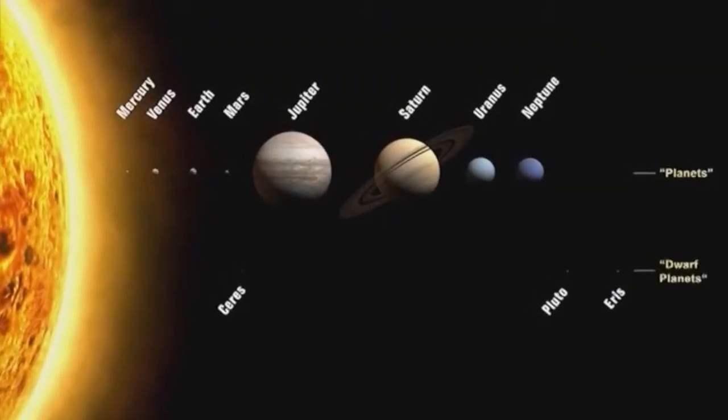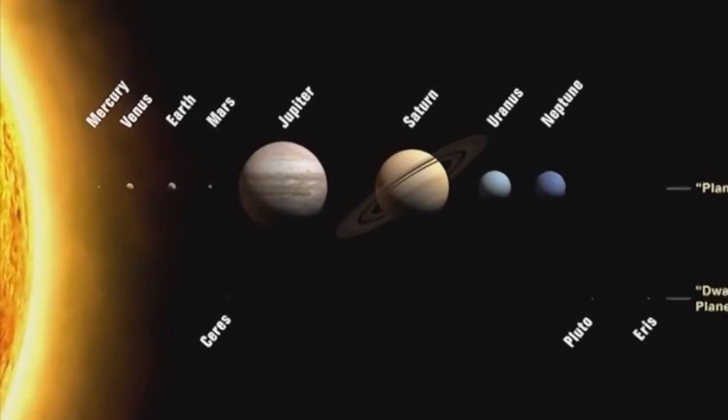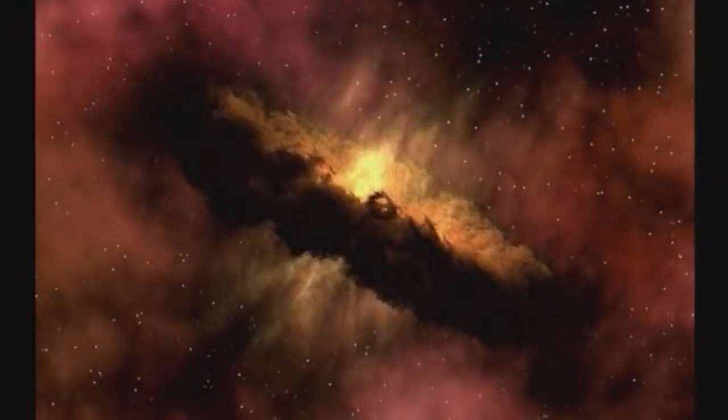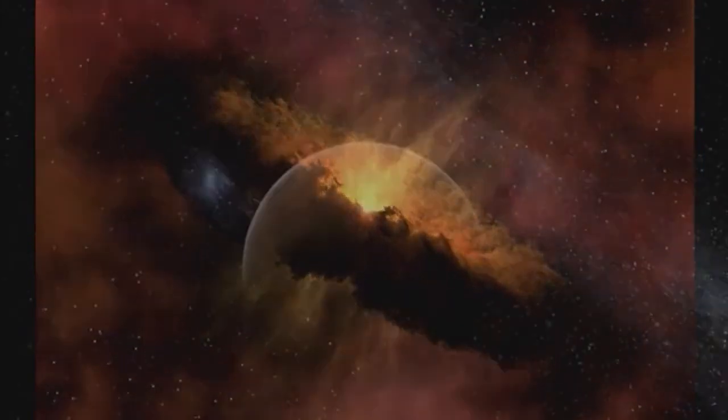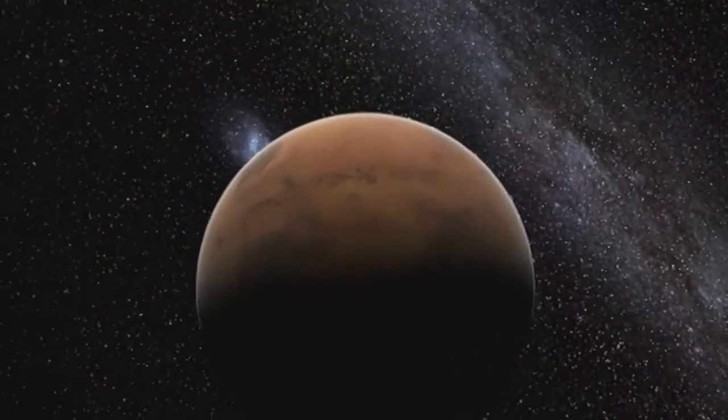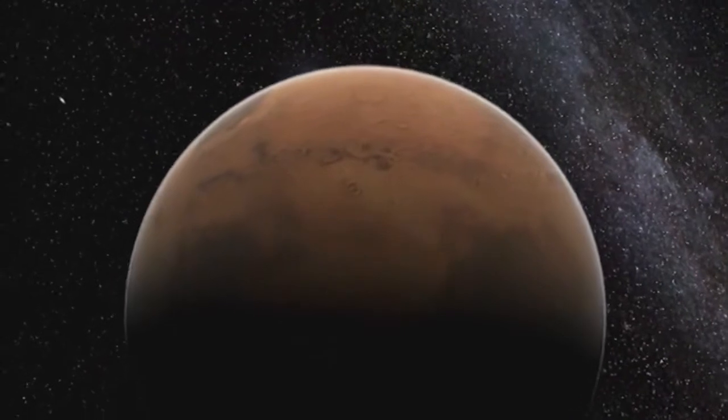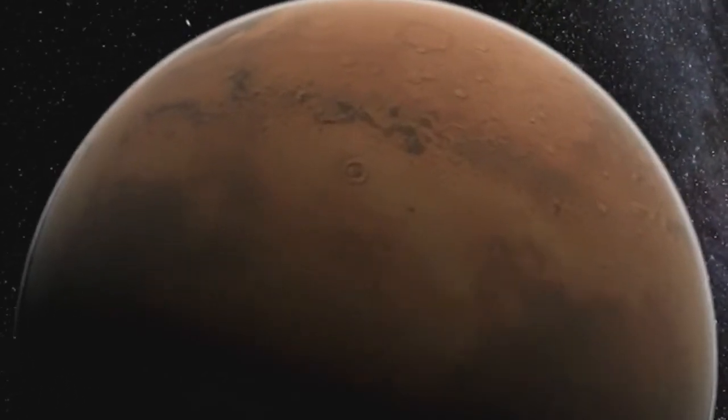In the first video of this series, we looked at the planets and moons in our solar system. We looked at the secular model for the solar system's origin, known as the solar nebula model. We discovered that there's lots of evidence against this model. Each of the planets contradicts it in various ways.